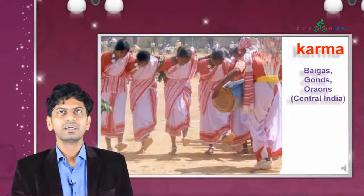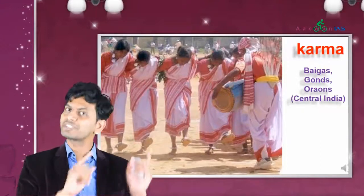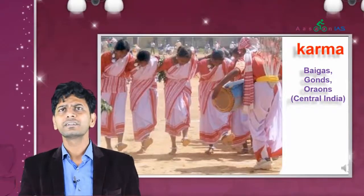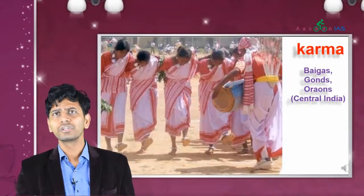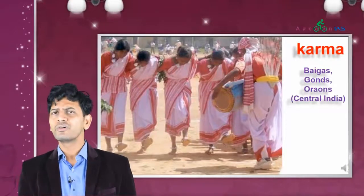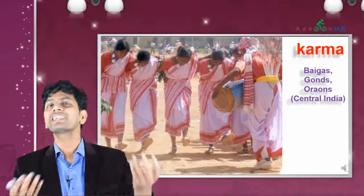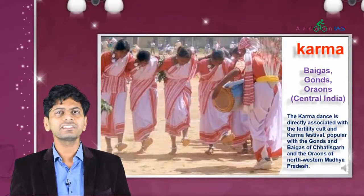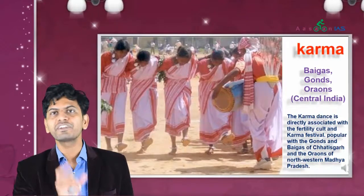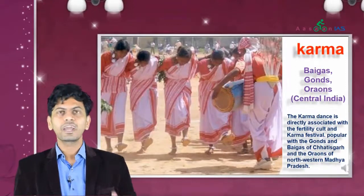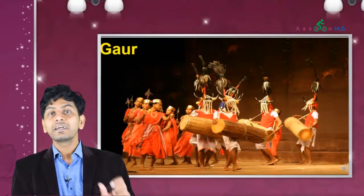Next, Karma dance. This is performed by the Baiga, Gond, and Warron tribes of central India. Baigas and Gonds are found in Chhattisgarh area; Warrons are in Madhya Pradesh. They celebrate this as a fertility cult, meaning it is related to harvest. The Karma dance is directly associated with the fertility cult and the Karma festival, popular with the Gonds and Baigas of Chhattisgarh and the Warrons of western Madhya Pradesh.